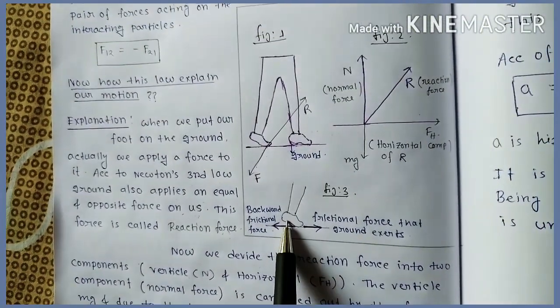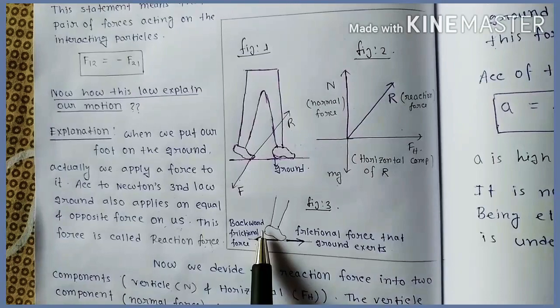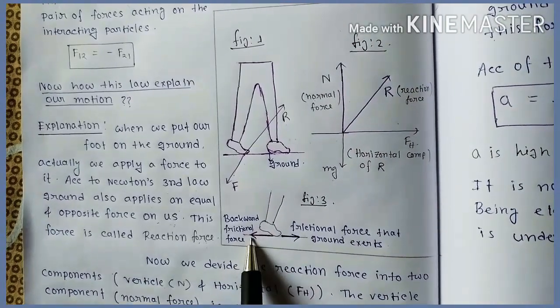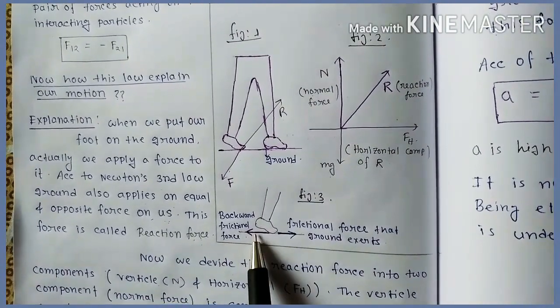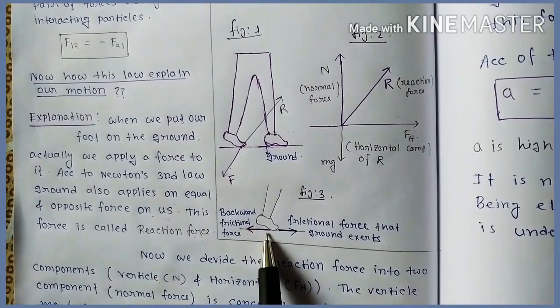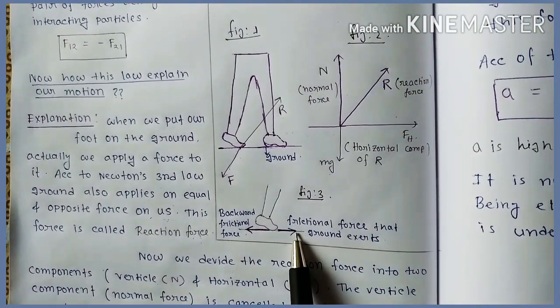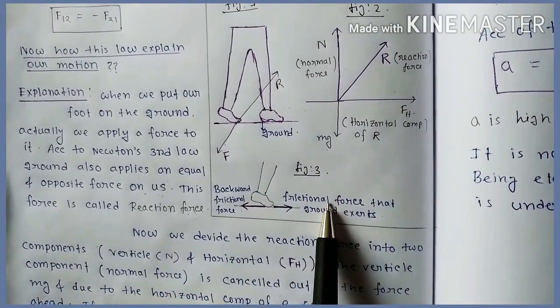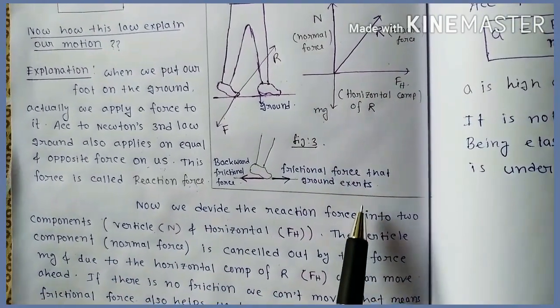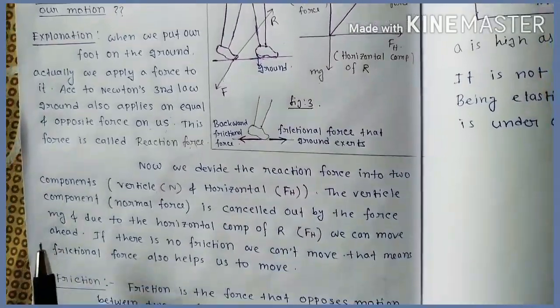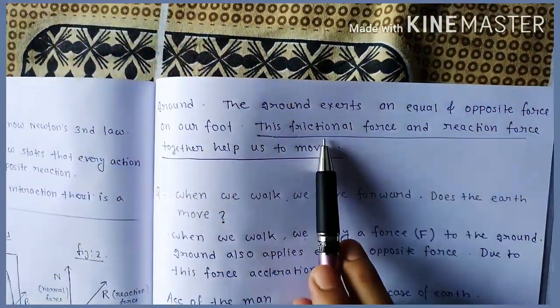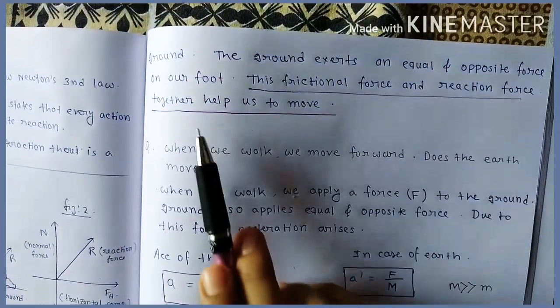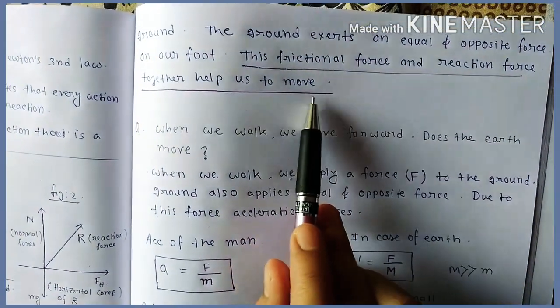In figure 3, the backward frictional force acts on the left side, and the ground exerts a frictional force to the right side. Due to this frictional force, we can move. So, the frictional force and the reaction force together help us to move.